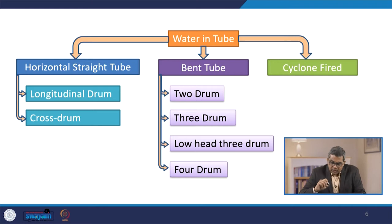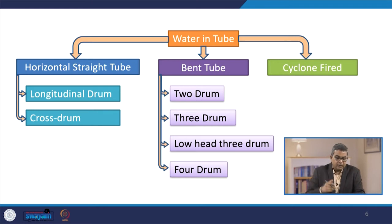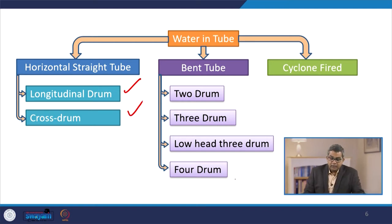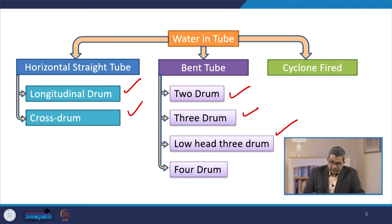Water-in-tube type boilers are divided into three categories. One is horizontal straight tubes, which may be longitudinal drum or cross drum. There may be bent tubes — two drum, three drum, low head three drums, or four drums. They can even have four drums and cyclone fired boilers.